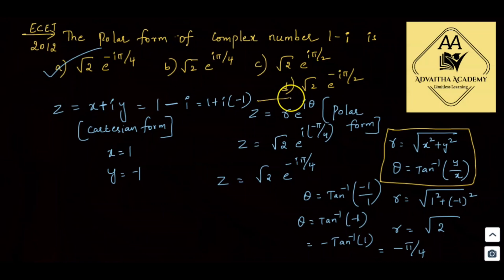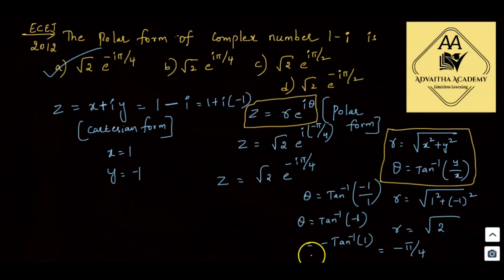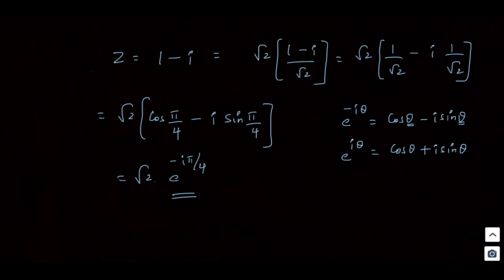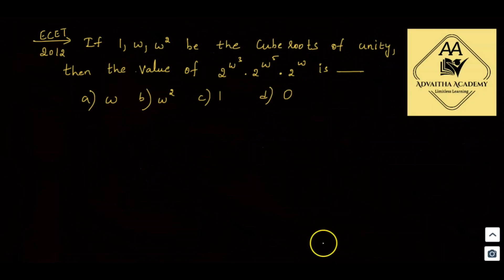This confirms the polar form z equals r times e^(iθ). The first problem is solved.